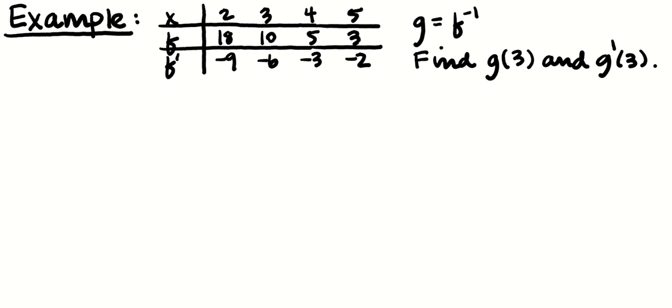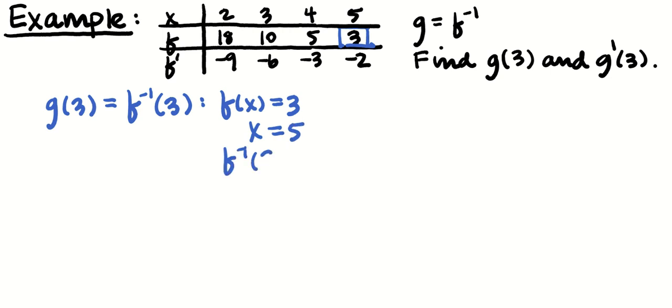Let's work an example. And this is by far the most common way that they will test this topic on an AP calculus multiple choice: data in a table. Find me the value of the derivative of the inverse function. Pretty direct question. So find g(3). g(3) is equal to f inverse of 3. And when I see f inverse of 3, I'm thinking, where is f(x) equal to 3? You look on the f(x) line in the table, and there it is. That happens at x equals 5. Meaning that f inverse of 3 equals 5. So g(3) equals 5.